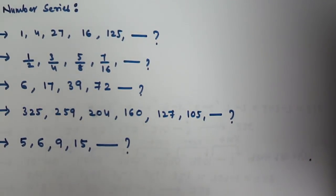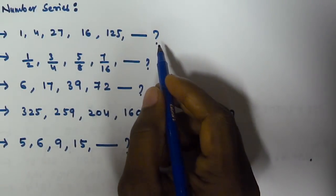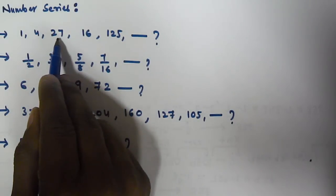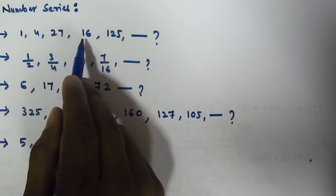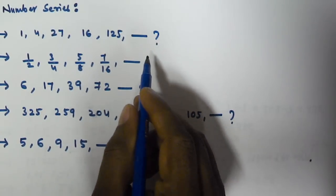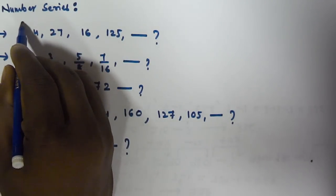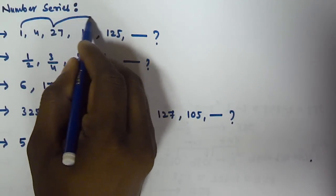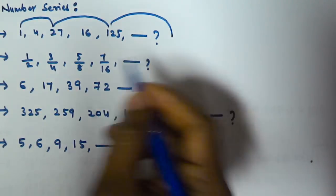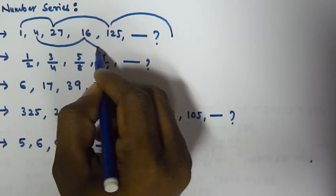If you observe the first question, 1 is 1 cube, 4 is 2 square, 27 is 3 cube, 16 is 4 square, and 125 is 5 cube. So if you observe the series, there are two series going on. One is cubes: 1 cube, 3 cube, and then 5 cube. So the next cube term would be 7 cube.